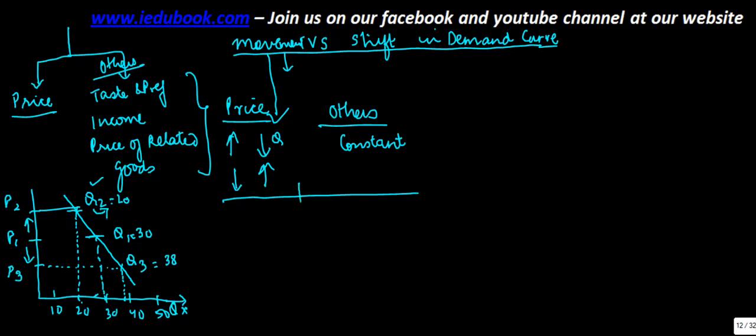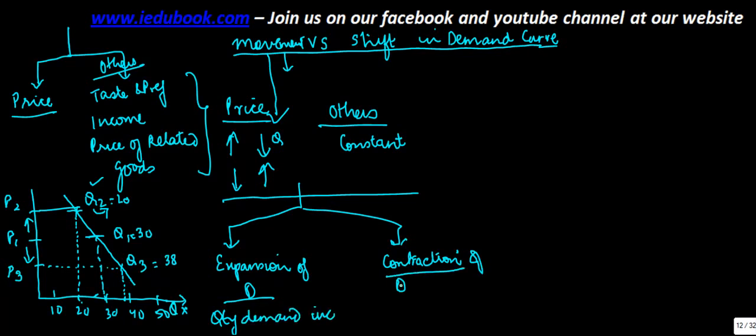So movement can actually be either expansion or contraction of demand. Expansion when the quantity demanded increases, contraction when quantity demanded decreases. And these increases and decreases are due to impact in price of the commodity, other things remaining the same.